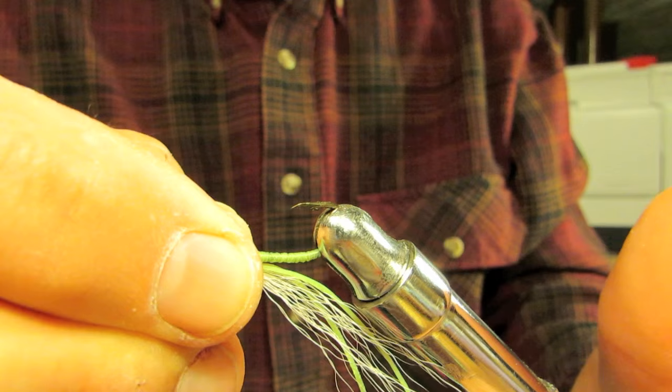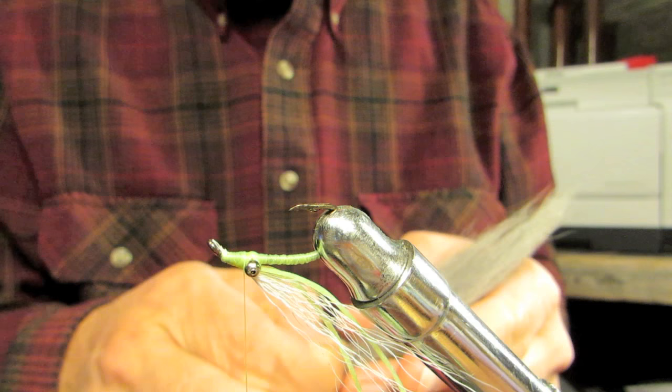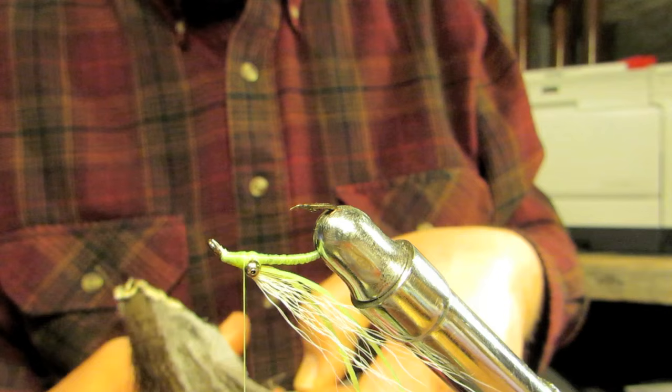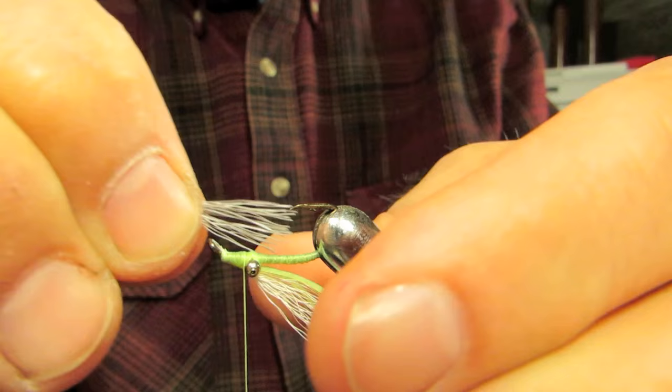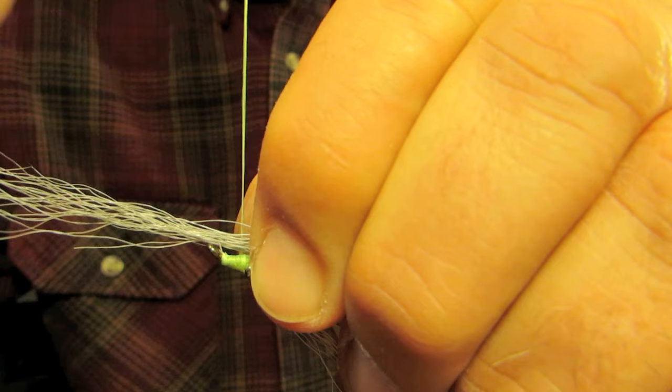Like this. And then you grab your gray bucktail. Once again, just a few strands. Probably that many. Just a few. Now here's something that's a little interesting. I'm going to put these on in this orientation. I'm going to make it so that the ends of those, the nice cut and even ends, end up right in the bend of the hook. Just like this.